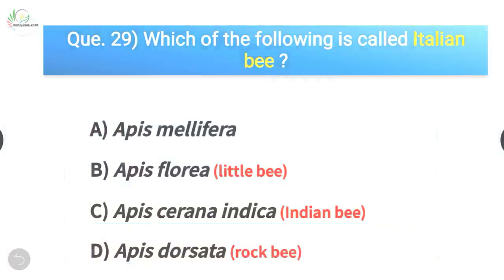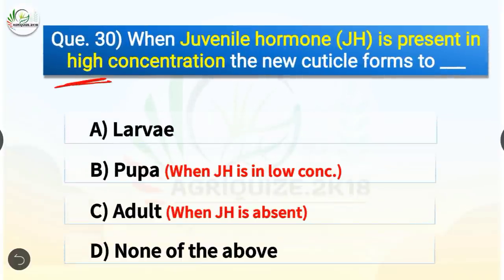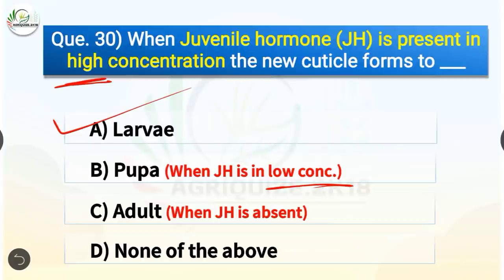Question number 30. When juvenile hormone is present in high concentration, the new cuticle forms to what? The options are larvae, pupa, adult, or none of the above. The correct answer is option A, larvae. When juvenile hormone is in high concentration, the new cuticle forms to larvae. When in low concentration, it forms to pupa. When juvenile hormone is absent, it is seen in the adult.